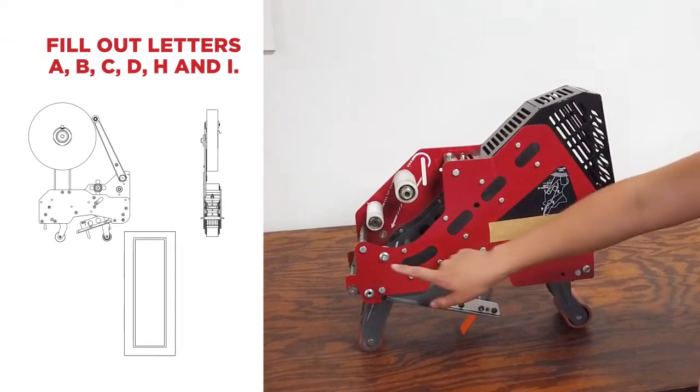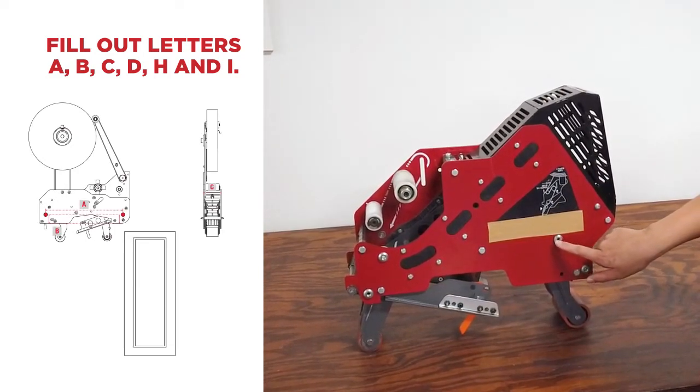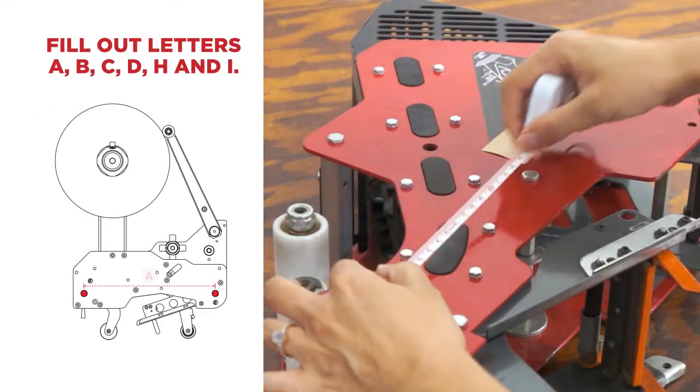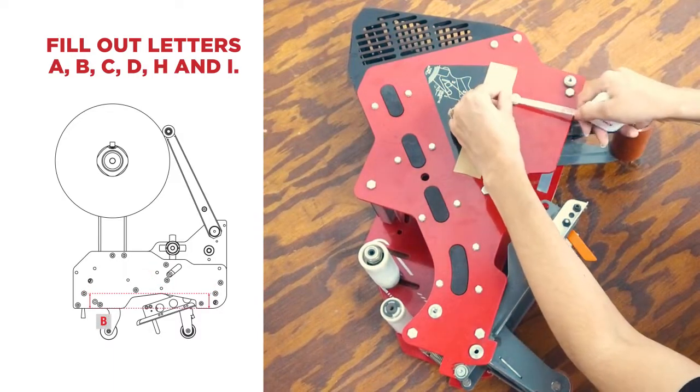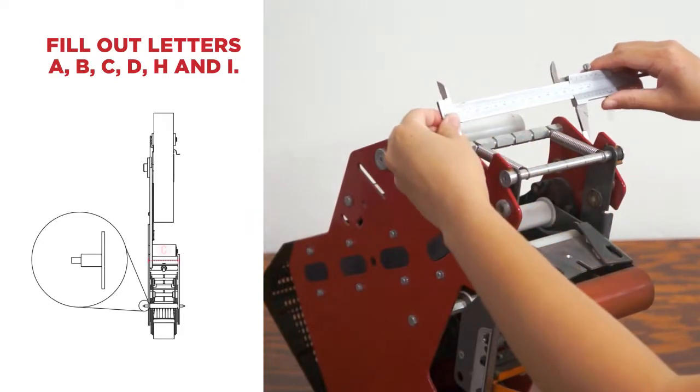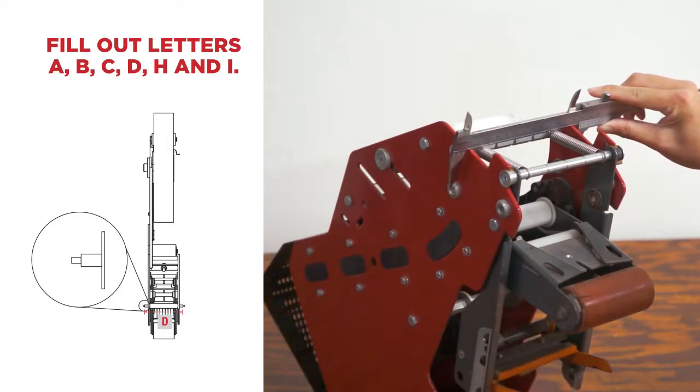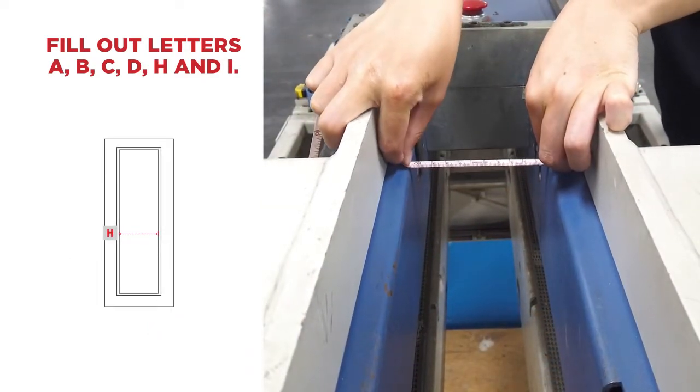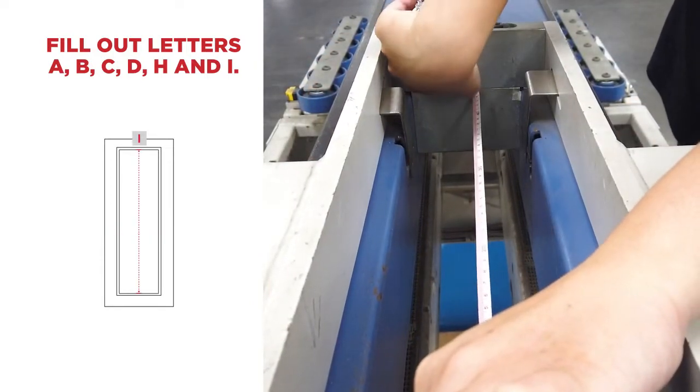If you selected screws, you only have to fill out letters A, B, C, D, H, and I. A is the length between the two centers of the studs. B is the height from the bottom of the tape head to the center of the studs. C is the width of the current tape head. D is the width of the two shoulders of the studs. H is the width of the tape head cavity on your current machine. I is the length of the tape head cavity on your current machine.